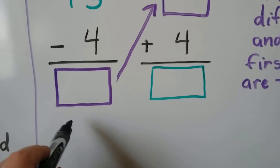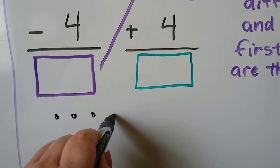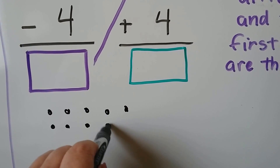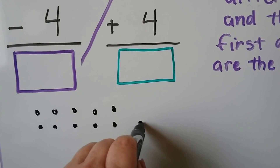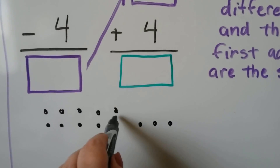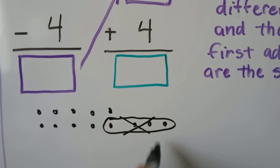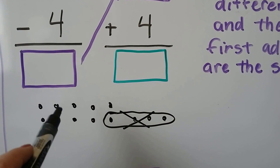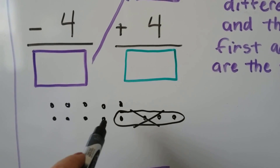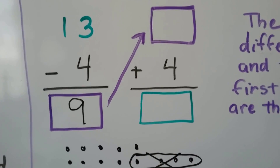We can use counters. We make thirteen counters, then take four of them away. After removing four, we count what's left: nine. Thirteen minus four is equal to nine.